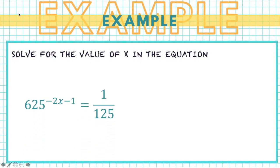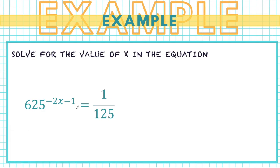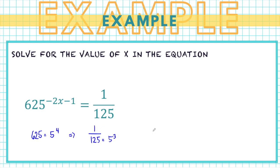In the next example, we have 625 raised to negative 2x minus 1 equals 1 over 125. We change the expressions to have the same base. We know 625 is 5 raised to 4, and 125 is 5 raised to 3. Since 125 is in the denominator, the exponent must be negative. So we replace 625 with 5 raised to 4 and 1 over 125 with 5 raised to negative 3.